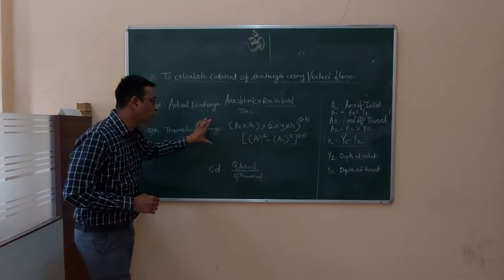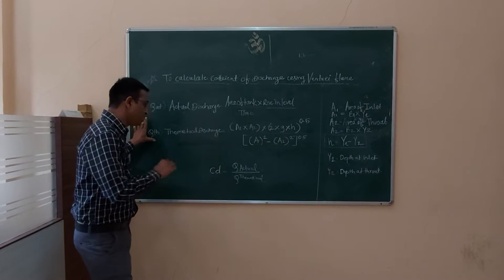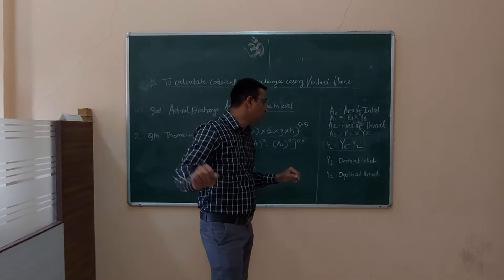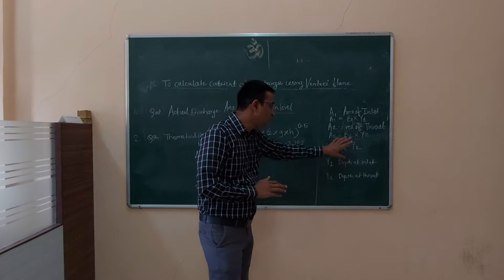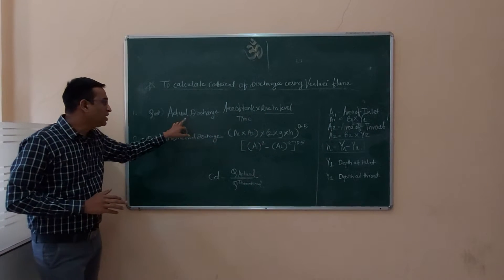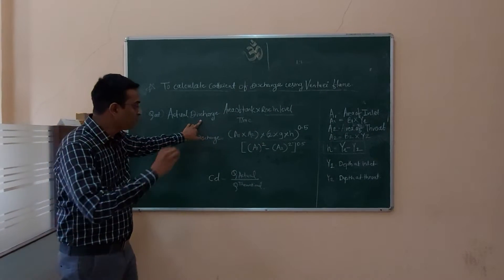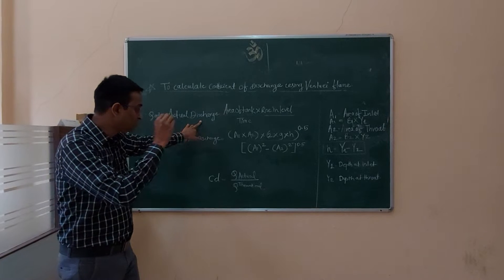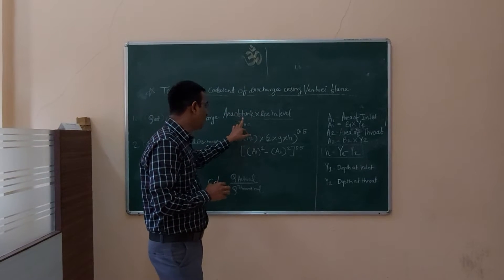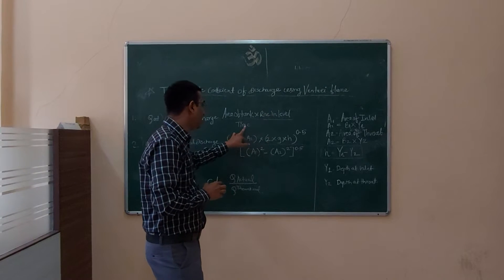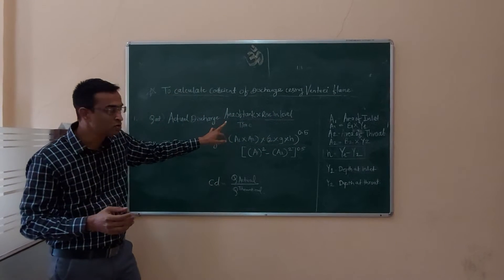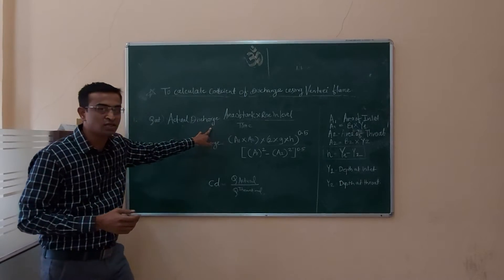This is the standard formula to calculate the theoretical discharge. By taking the dimensions and readings on the open channel we will obtain these values. We are also going to calculate the actual discharge using the area of the tank and the rising water level divided by time — a procedure already explained in previous videos.